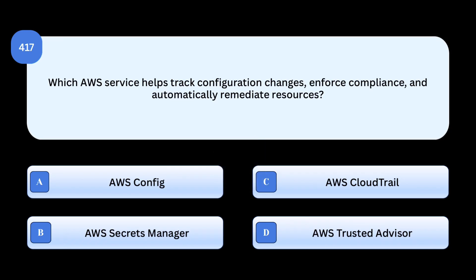Correct answer: AWS Config. AWS Config provides configuration recording, compliance auditing, and remediation actions on AWS resources. Why others are incorrect: AWS Secrets Manager manages credentials and secrets. AWS CloudTrail records API calls, not compliance remediation. AWS Trusted Advisor provides best practice checks, not enforcement.